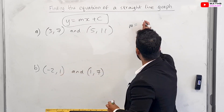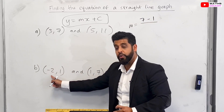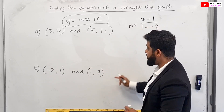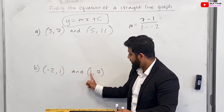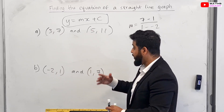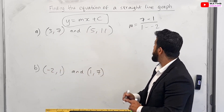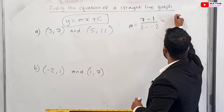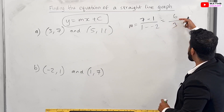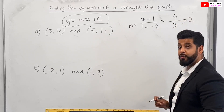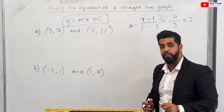So we're going to do 7 minus 1 over 1 minus minus 2. Remember, you can't swap the order around — if you do 7 minus 1 for the numerator, you have to do 1 minus minus 2 for the denominator. So 7 minus 1 gives 6, and 1 minus minus 2 is 1 plus 2 which is 3. So 6 over 3 equals 2. We seem to be getting a lot of gradients of 2 today — hopefully we'll pick one where we get a negative gradient next.